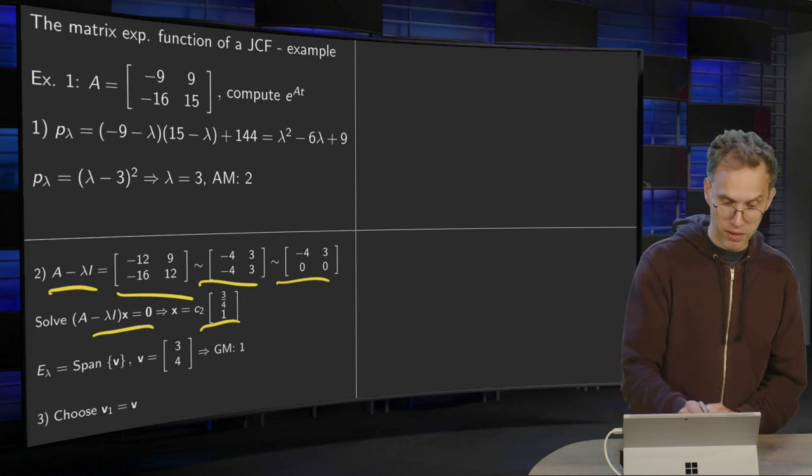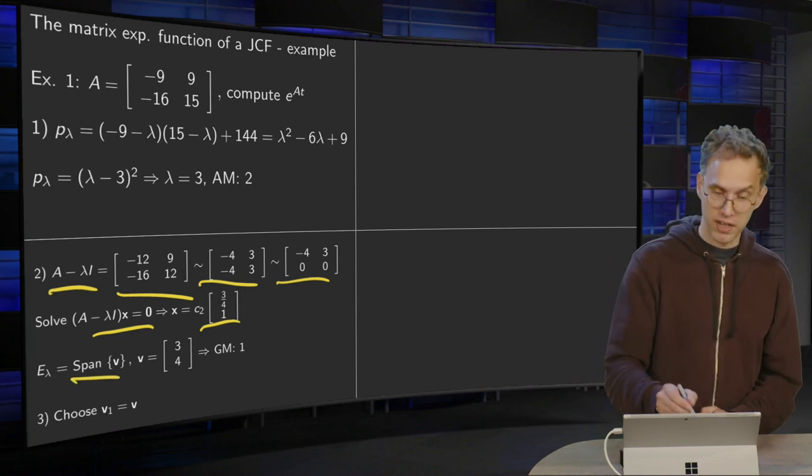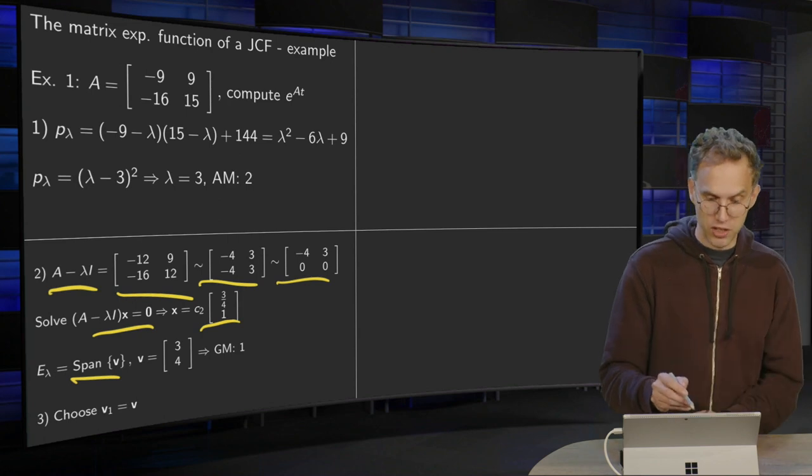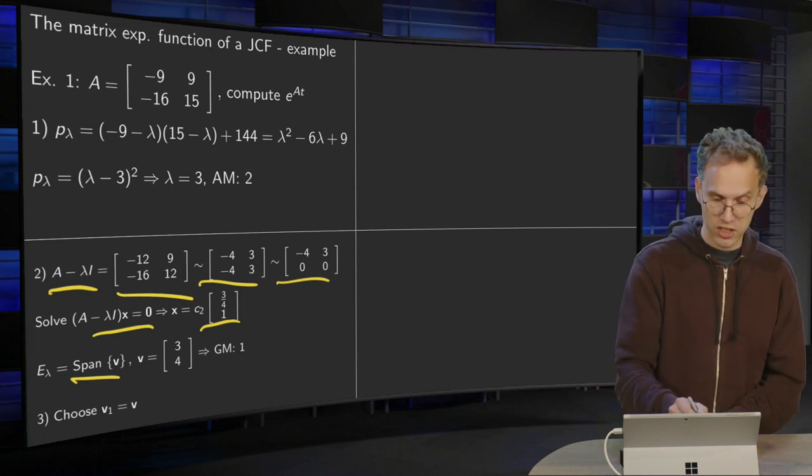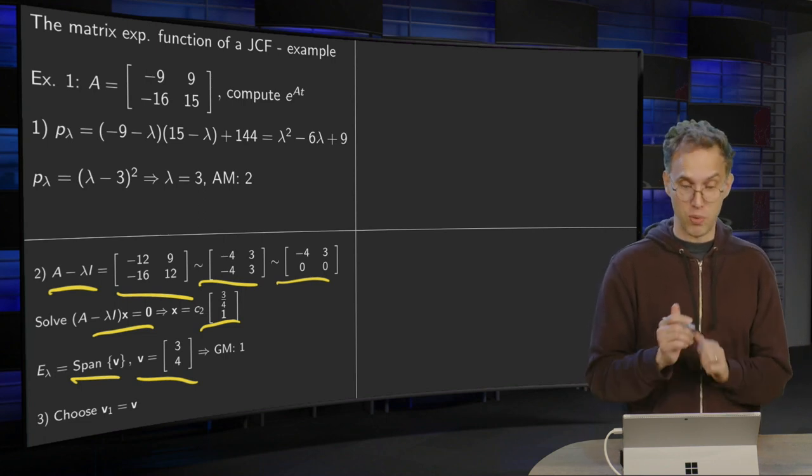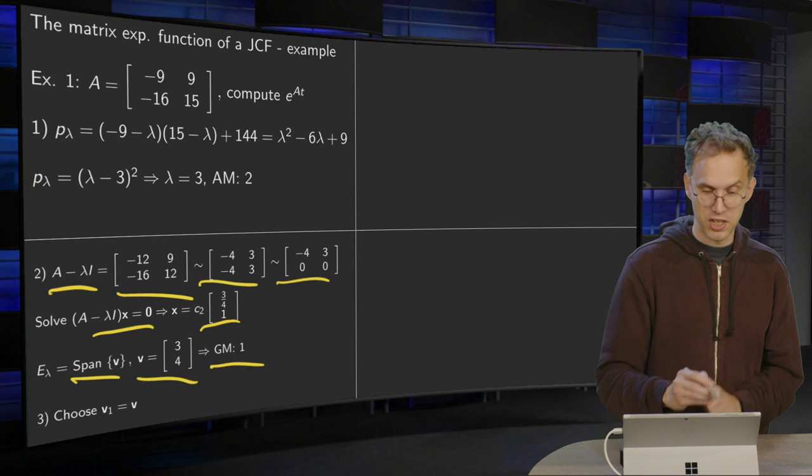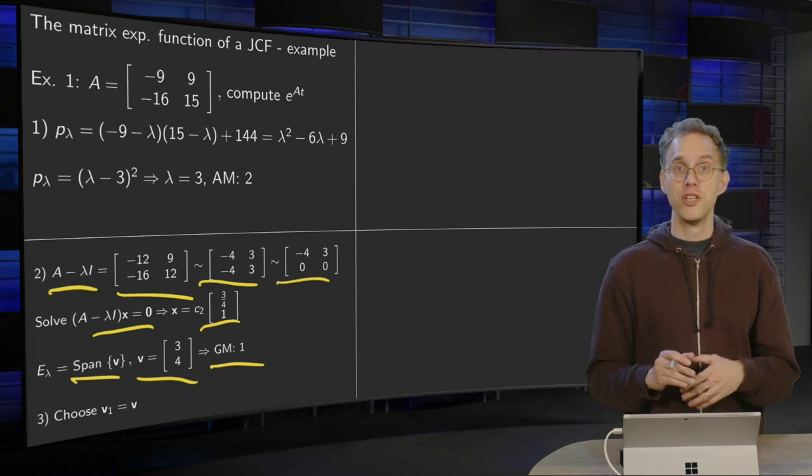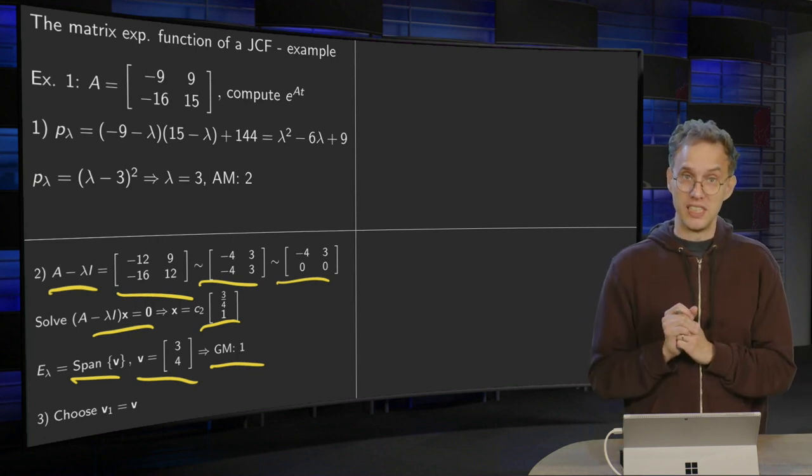So e lambda is the span of v, where v is, well, take c2 equals 4 to get rid of the fractions, so v equals (3, 4). So we see that the dimension of e lambda is 1. So the geometric multiplicity is only 1. So we need one more generalized eigenvector.